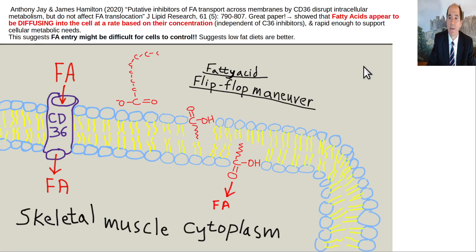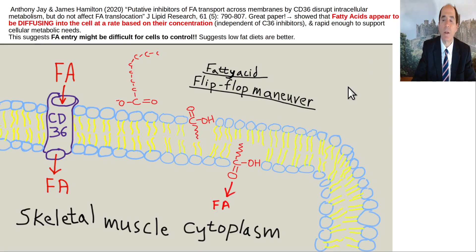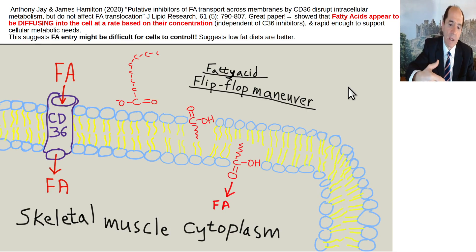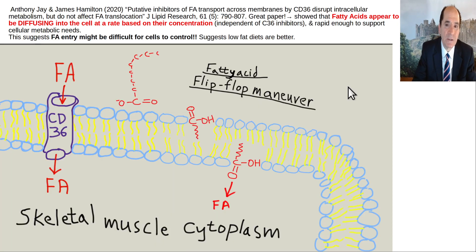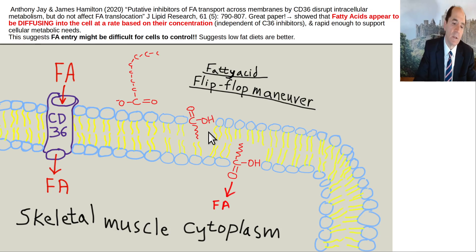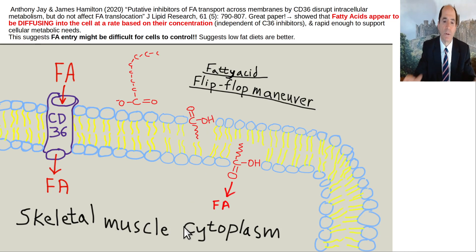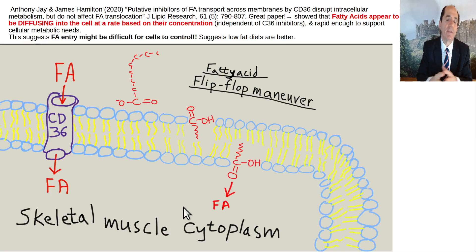How does fat cause insulin resistance? Uniquely, fat can travel by a flip-flop maneuver into skeletal muscle cells — even if you block all transporters, the fat still gets in. The only solution is to reduce dietary fat intake, especially saturated fat, which is most prone to this. It intercalates into the outer leaflet of the plasma membrane, flip-flops to the inner leaflet, enters the cytoplasm, goes into mitochondria, and overwhelms them. Saturated fat produces more electron carriers than unsaturated fats because unsaturated fats are already partially oxidized.